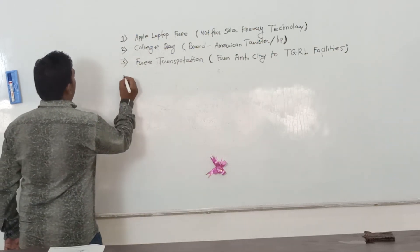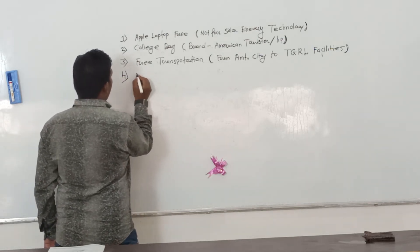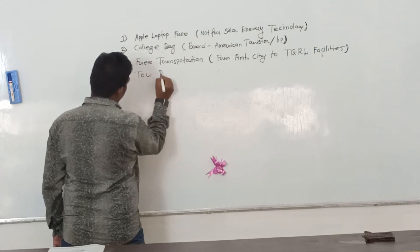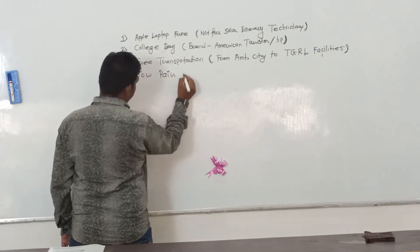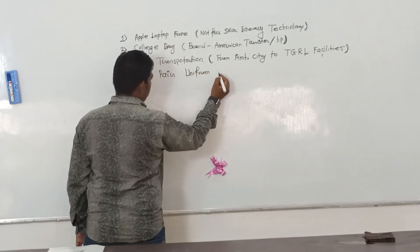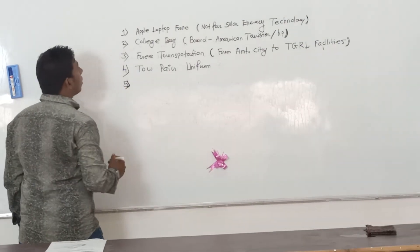And the fourth one is you get standard two pair, two pair uniform, two pair uniform. And another one is that is the seven wonders.